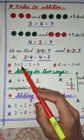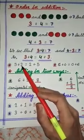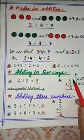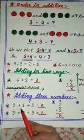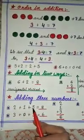5 plus 2, here also we have two digits, two numbers. 6 plus 2, here also we have two numbers. Here we will learn how to add three numbers together.